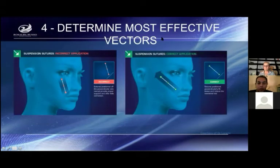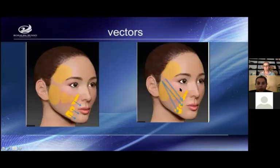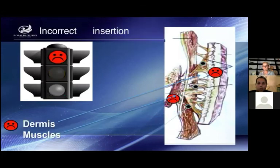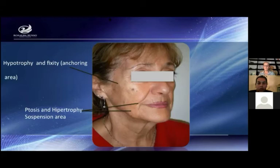It is important to find the most effective vector. Here you can see the incorrect application of sutures versus the good and correct application. You can see when you lift the nasolabial fold and the jaw, these are the vectors you have to use in order to have a good long-term result. You have to insert the sutures at subcutaneous level, in the superior medial or deep fat compartment. Be careful about the dermis or muscle, as the patient will feel pain and it will be impossible to continue. Take note of the hypotrophy of this area — this is the area of fixity and anchoring.